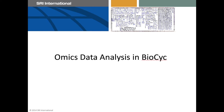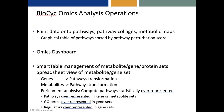BioCyc contains multiple omics data analysis tools. Given an omics dataset — which could be transcriptomics, metabolomics, or proteomics — you can paint that data onto individual pathway diagrams, onto multi-pathway diagrams or pathway collages, and onto the full metabolic map diagram. We also have a tool called the Omics Dashboard. Our SmartTables facility lets you manage gene sets, metabolite sets, and protein sets, and create a spreadsheet view connected back to the database. You can do transformations within SmartTables, like transforming a list of genes into a list of all the pathways those genes are in, or transforming a list of metabolites into a list of all the pathways those metabolites are in.